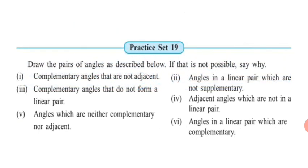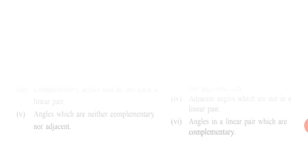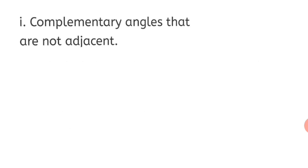Now let's see Practice Set 19. The question says: draw the pairs of angles as described below. If that is not possible, say why — you have to give a reason. There are altogether six questions; we are going to solve one at a time.